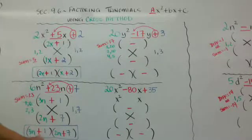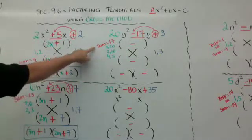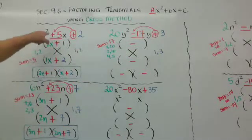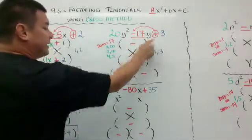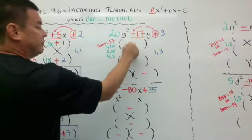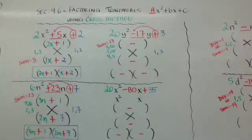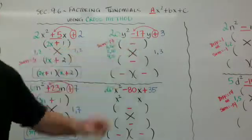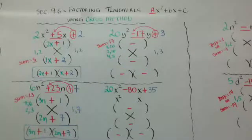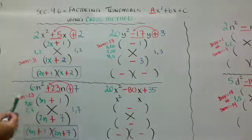Don't forget to write it next to each other — don't leave it in the cross. Here's another one. I need a sum of 17. But if you notice, this sign is positive 3, so I know the signs are going to be the same. But I have a negative 17 here, so I know it's going to be negative negative in my answer. I list my factors of 20: 1 and 20, 2 and 10, 4 and 5. And my factors of 3, which are prime again — so I put the 1 and the 3 here to make it easy.